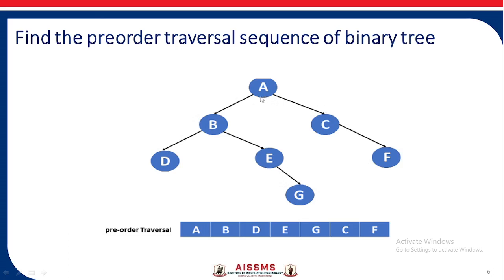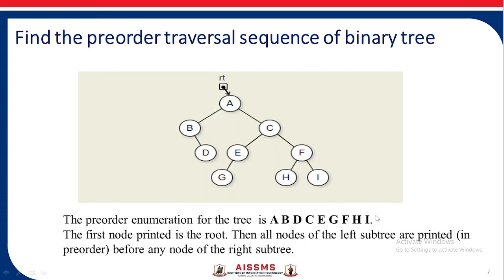In this example, we write A first as it is the root, then move on to the left part — the root of the left subtree is B, so we write B. Then move on to the left part of B: there is nothing left, so we move on to the right part of B — root is E, we write E. Then to the left nothing is there, we go to the right: G, we write G. Next we move on to the right part of root A — C is the root, we write C. There is nothing on the left part, we go to the right part: F.